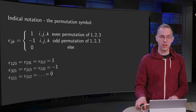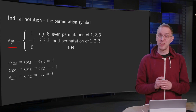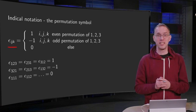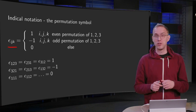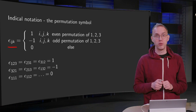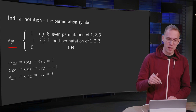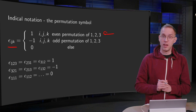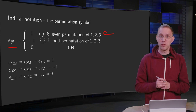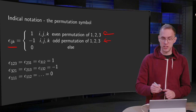First let us take a look at our epsilon_ijk. It has three indices i, j, and k, which can all take the values one, two, and three, so in total we have to specify 27 values: three times three times three. How is it defined? It is one if you have an even permutation of one, two, and three; minus one if you have an odd permutation; and zero otherwise.